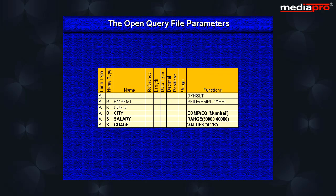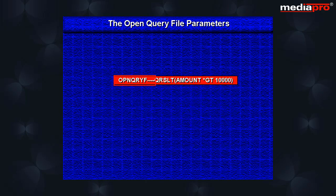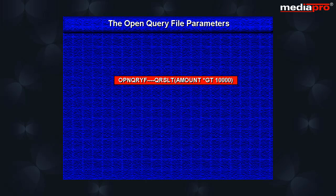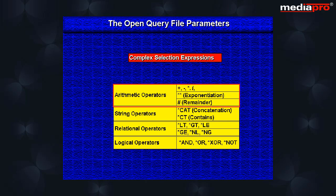Logical files allow us to select a subset of the records from the database file using the select and omit statements. But the select and omit rules are fixed at the time of compilation and cannot be changed dynamically. The open query file command allows us to specify dynamic record selection through the query select parameter, where we can specify complex selection expressions using the various arithmetic, string, relational and logical operators.